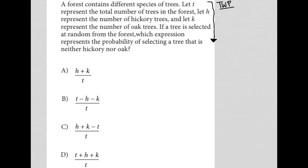So the question says a forest contains different species of trees. Okay. Let T represent the total number of trees in the forest. All right. So there we go. T equals trees or number of trees.